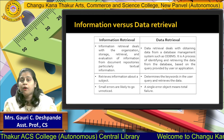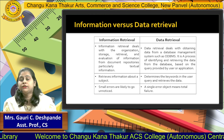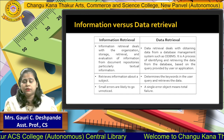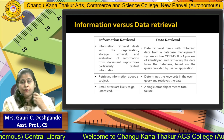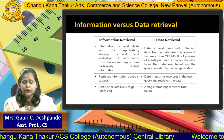Now let's see the difference between information retrieval and data retrieval. Information means a sequence of data, and data means raw facts. IR deals with a particular organization — suppose a company wants to store their data in an internet format, then we use an IR system. DR is used when we want to find data from SQL, Oracle, or any other databases.